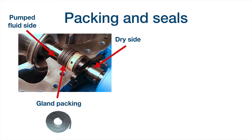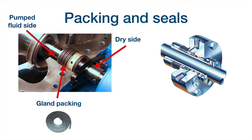Sometimes packing rings are overtightened by maintenance people trying to eliminate leakage entirely — but please note: there will always be leakage through the gland packing. This is normal. Do not overtighten. To achieve a lower level of leakage, mechanical seals are used. Here you have a mechanical seal — of course it has more components, is more complex, and the price will be higher, but you will not have visible leakage.